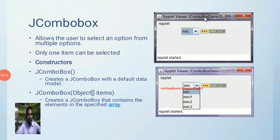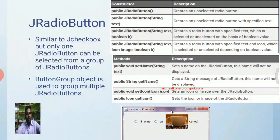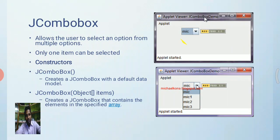Let us discuss JComboBox, one more component in Swing. It allows the user to select an option from multiple options. Initially it appears collapsed, and when the user clicks the arrow it expands to display the list. Then the user selects one option — only one can be selected from the list. When you look at the constructors, there is a constructor which accepts nothing.